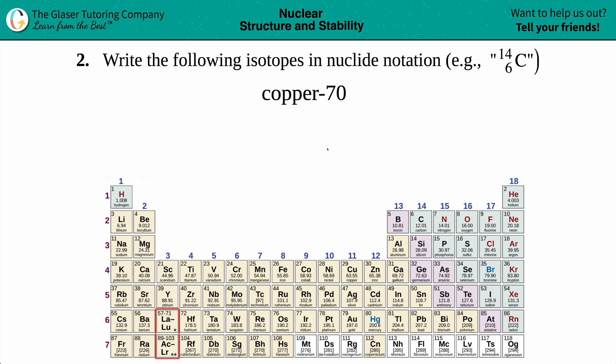Number two: write the following isotopes in nuclide notation. For example, they give us what we need to do. So we have to have a number on the top, so maybe I'll color that in green.